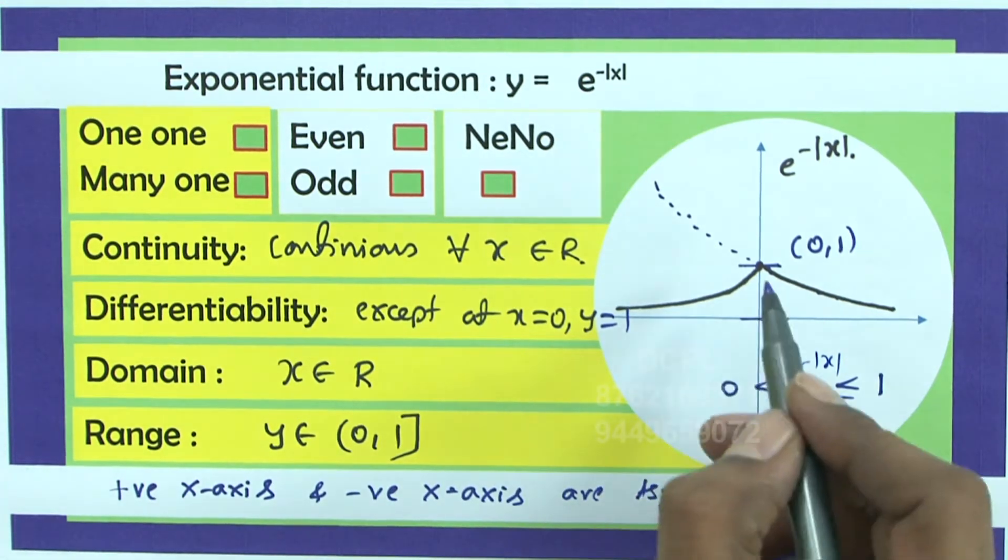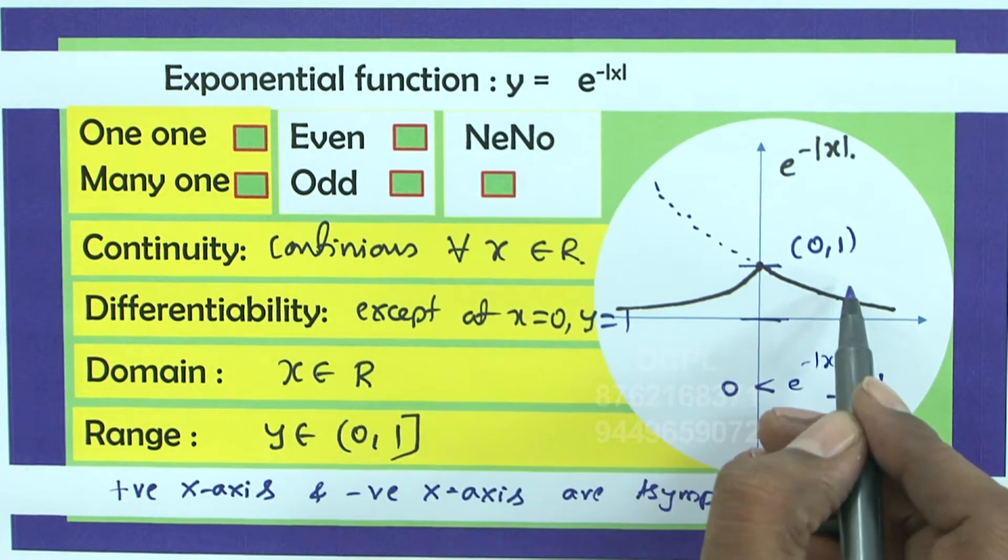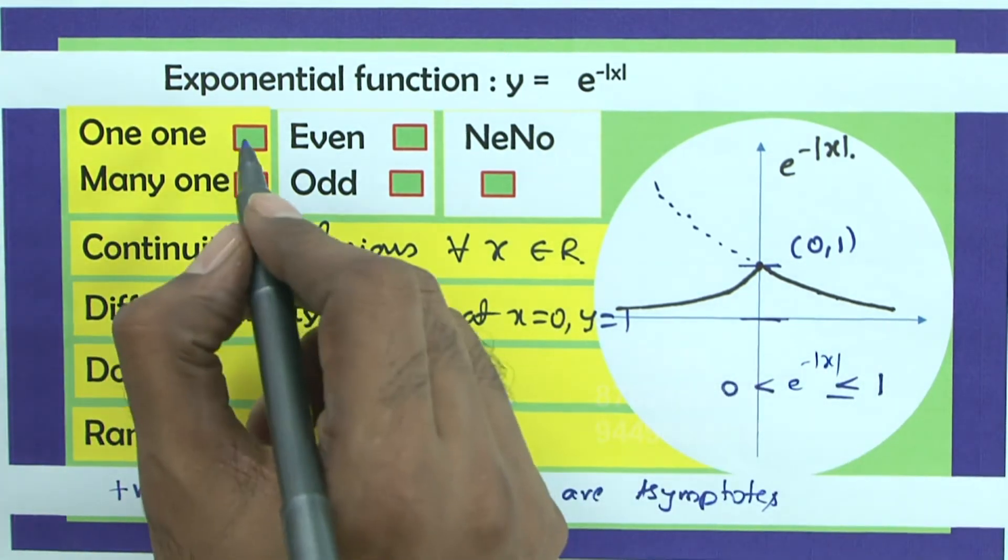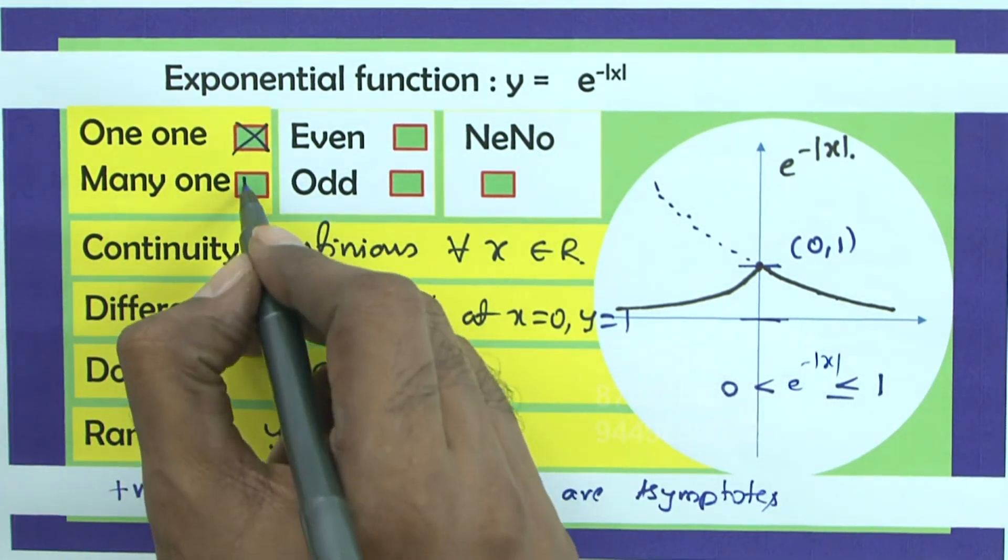So, a line drawn parallel to x-axis meets the graph at more than 1 point. Therefore, it is not 1-1. It is many-1.